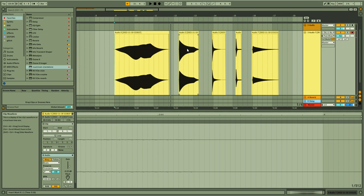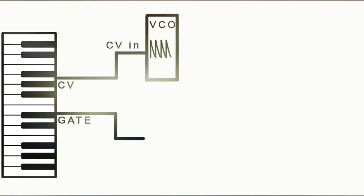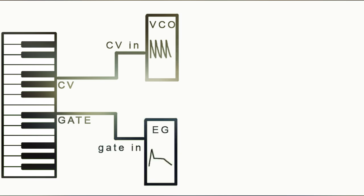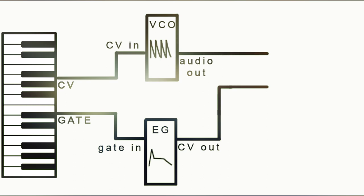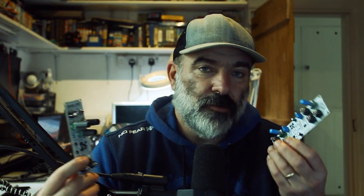The way this works is pretty simple. You take your CV and gate signals out of your keyboard — the CV signal goes into your VCO, which makes the note change. The gate goes into the gate input of your envelope generator, so every time you press a key the envelope generator is triggered. Then you take your audio out from the oscillator and the CV shape from the envelope generator and connect both into your VCA. The VCA uses the oscillation and amplifies it according to the shape of the envelope generator.